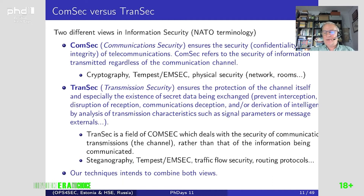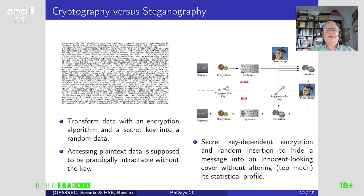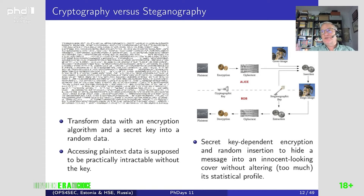Let us compare cryptography versus steganography. On the left, you have cryptography — you transform any plaintext data into encrypted data with a secret key, and the data, once encrypted, looks like random data. In the security analysis, we suppose that to recover plaintext data you have to recover the key, which is supposed to be intractable, even if the algorithm is known. On the right, you have steganography.